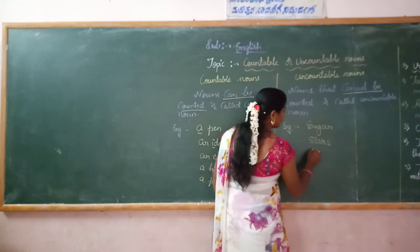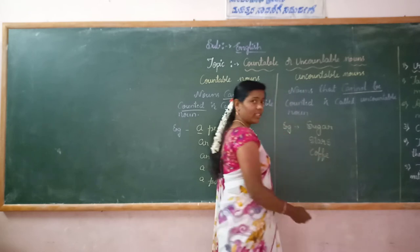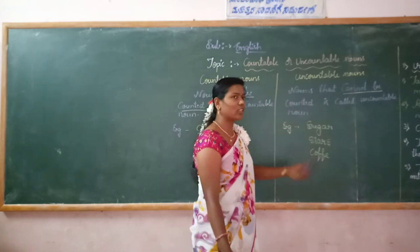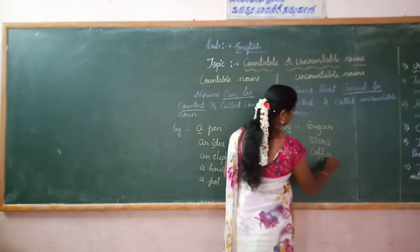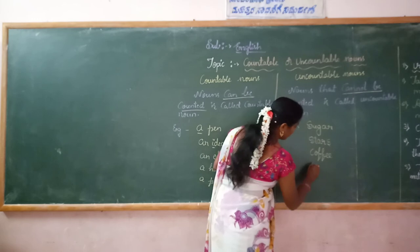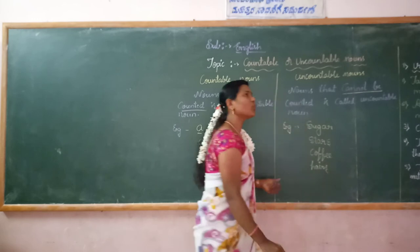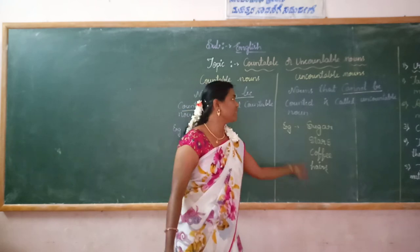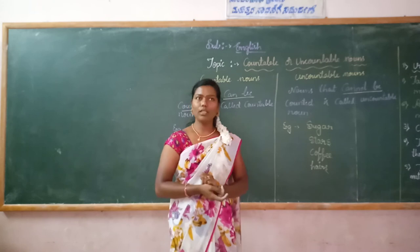And coffee — can we count it? No, we can't count it. So it is an Uncountable Noun. And next one: hair. It is not possible to count the hairs on our head. So it is also an example of Uncountable Nouns.